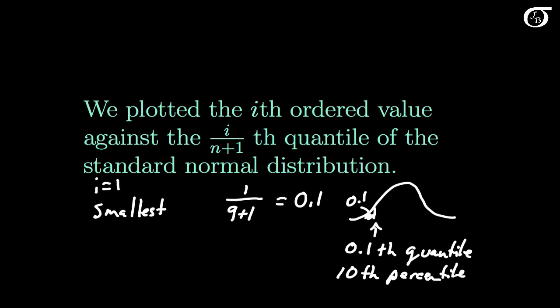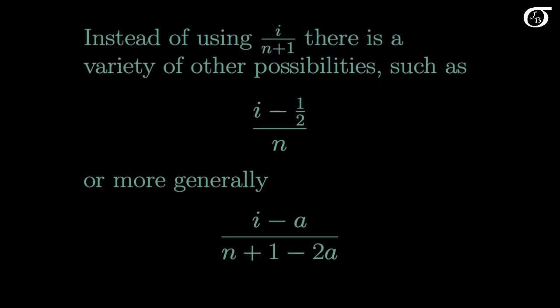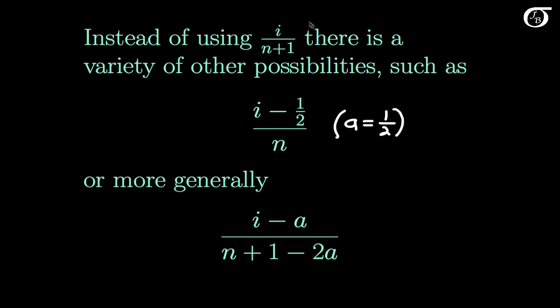We used that method for all of our ordered data values. Instead of using i over n plus 1, there are other possibilities, such as i minus one-half over n, or more generally i minus a over n plus 1 minus 2a, where a is some number between 0 and one-half. The formula i minus one-half over n corresponds to a equals one-half, and i over n plus 1 corresponds to a equals 0. What we are simply trying to do is approximate what we would expect if sampling from the standard normal distribution.